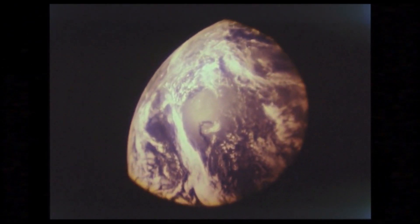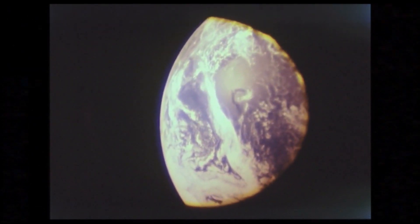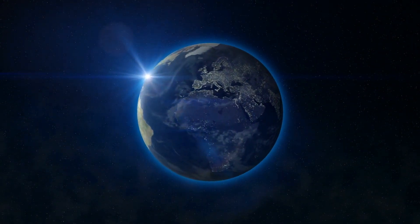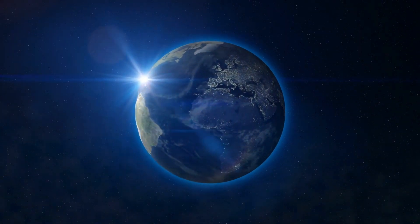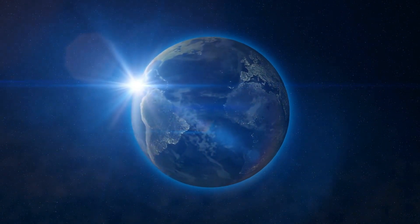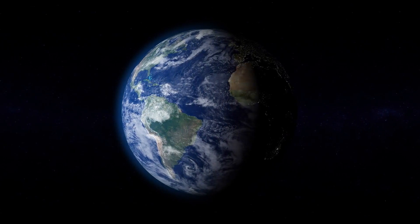True polar wander, or planetary reorientation, is well documented for other planets and moons and for Earth at present day with satellites. However, testing its prevalence in Earth's past is complicated by simultaneous motions due to plate tectonics.